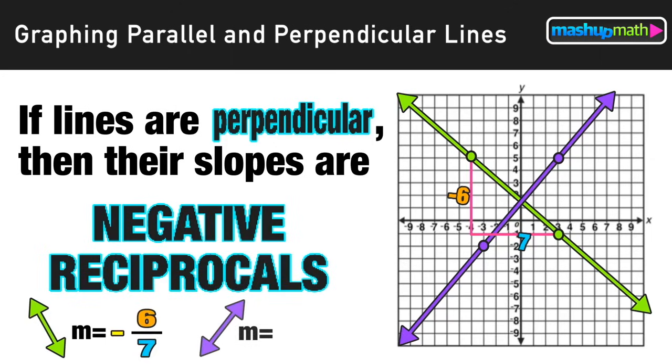Now since the purple line is perpendicular, the slope is going to be a negative reciprocal. And again what that means is flip and switch. We take the slope of the other line, we flip it and we switch the sign, so in this case now it becomes positive seven over six.